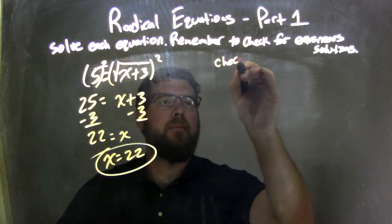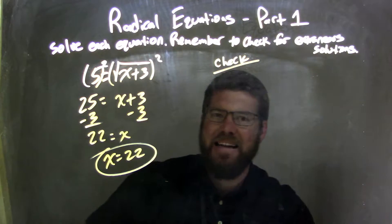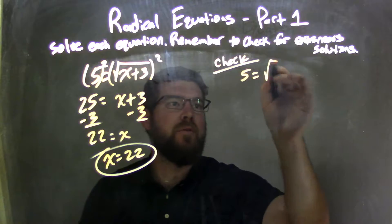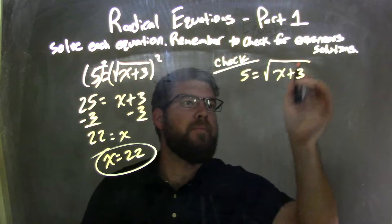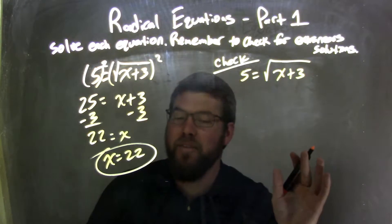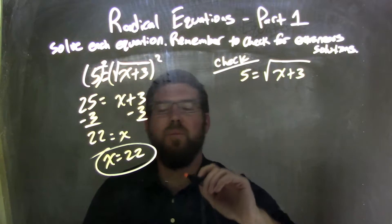Well, now I need to check. I need to check that. So, to do that, I rewrite my equation: 5 equals square root of x plus 3. Now, I'm not solving here, I'm checking. I take 22 and plug it in for x.